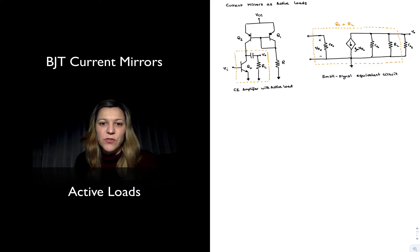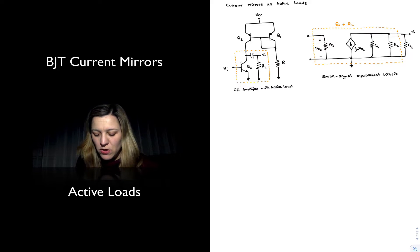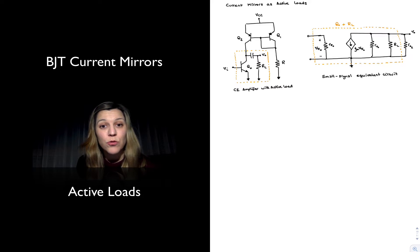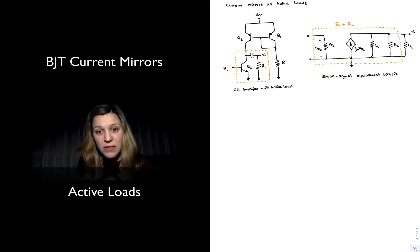Hello. In this video we are going to talk about the use of current mirrors as active loads. Basically what that means is using the current mirror as a load to an amplifier. I have drawn a little example here with the common emitter amplifier, where I have used a current mirror as an active load to the amplifier.